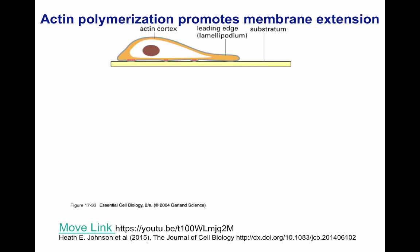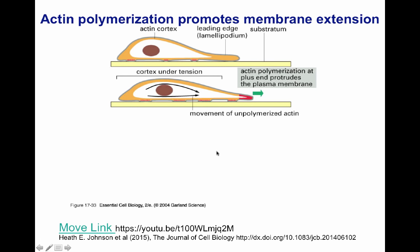When a cell moves by actin polymerization, this is based on substrate binding — very similar to the gliding mechanism in prokaryotes that do not use a flagellum. The cell has the actin cortex underneath the cell membrane, and in red you can see the areas where the cell has contact with the substrate. The lamellipodium is the leading edge going forward. As the cell elongates the membrane by polymerizing actin underneath it, that pushes the membrane forward, stretching the cortex through the area of polymerization.